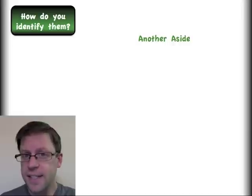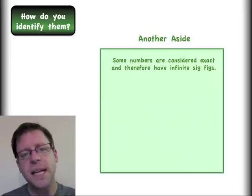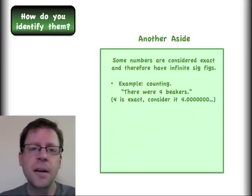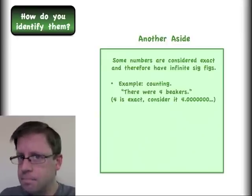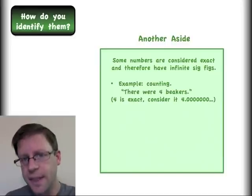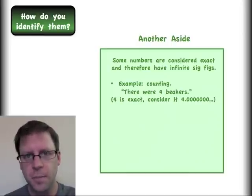As another quick aside, not all numbers are the same. Some numbers are considered to be exact, which is to say that they would have an infinite number of significant digits. For example, I have four beakers. Four is not a measured number. That is something that is exact. I can assume that is 4.0000, however many zeros I want, in order to make sure that it is never a limiting factor for me.